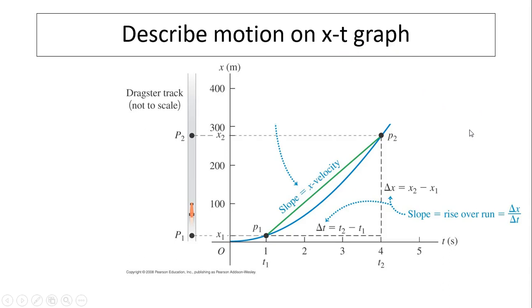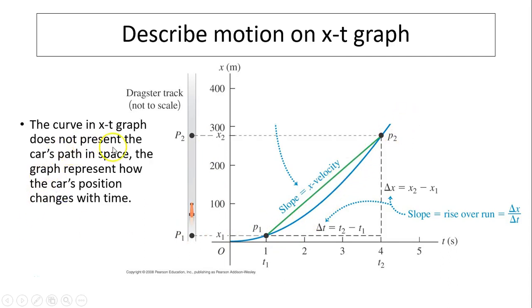We can also describe motion on the x versus t graph. So here is a graph. We have learned this in Regents. This is a motion of car going from p1 to p2. And here is the graph. What does this graph represent? The graph does not represent a car's path in space. The graph represents how the car's position changes with time. So here is at t1, x1. At t2, it has x2. Here is a path. For those of us in Regents, remember last year this curved path indicates an acceleration.